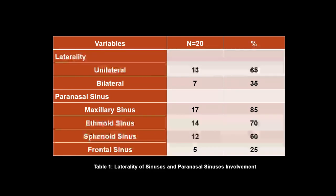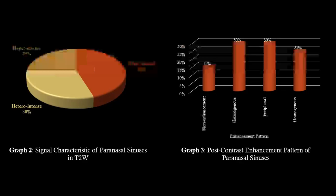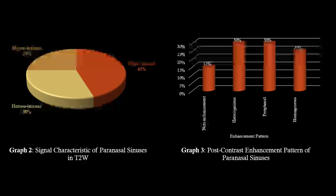The least commonly involved sinus was the frontal sinus, seen in only 25 percent of patients. On T2-weighted images, the most common signal characteristic was hypointensity, followed by heterointense and hyperintense patterns. On post-contrast enhancement, the most common pattern was heterogeneous and peripheral enhancement, followed by homogeneous enhancement. Fifteen percent of patients showed no enhancement on post-contrast images.